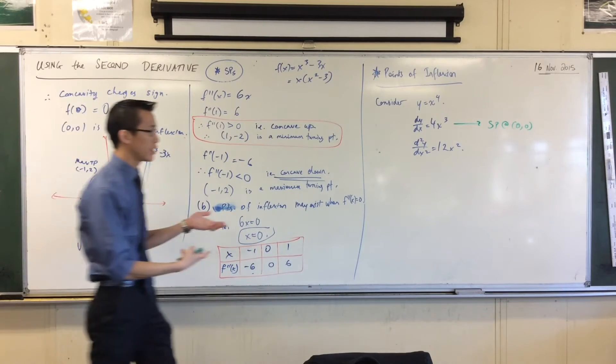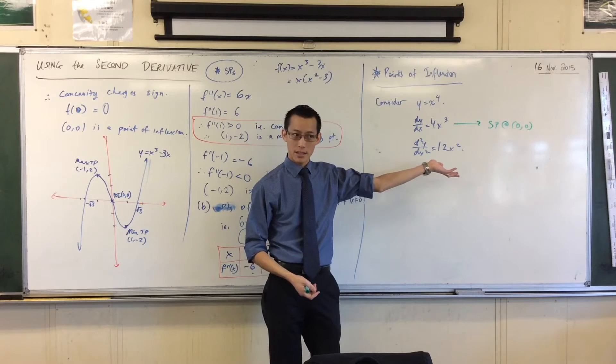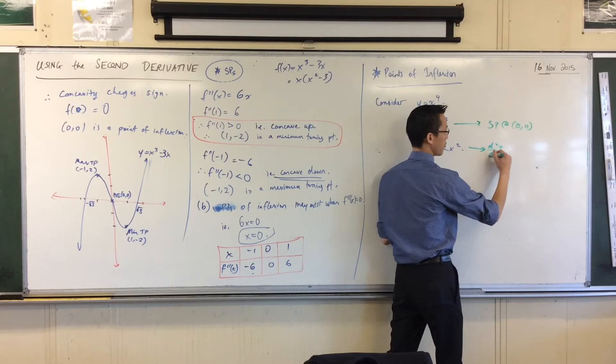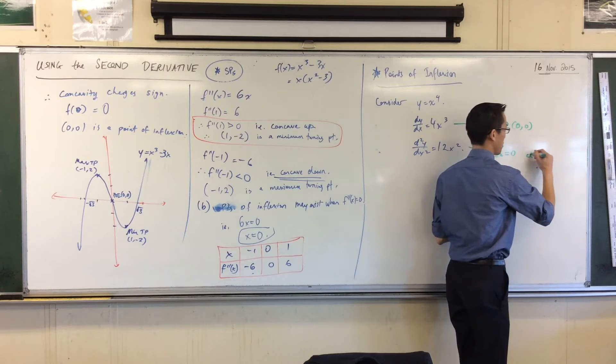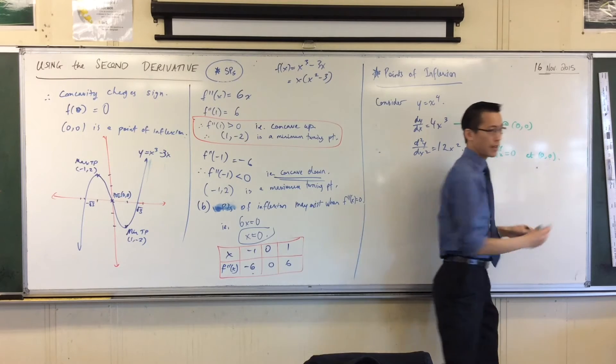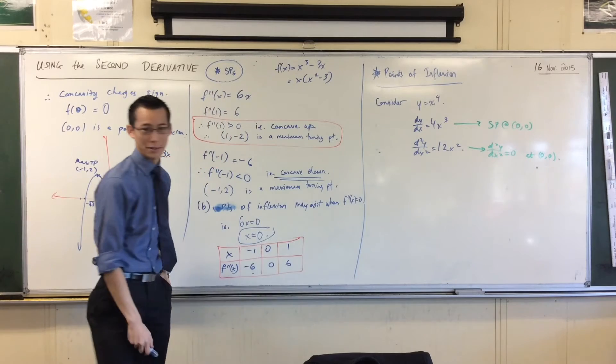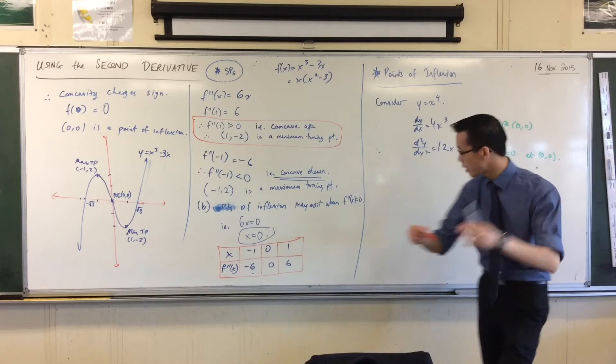But when you look at the second derivative, there's clearly a spot where the second derivative is 0. I can say the second derivative is 0 at the same point, right? At (0,0). But what does this look like? How do we usually, like we've drawn y = x^4 before. What does this thing look like? Let's draw it. Yeah, you've got an idea, right?